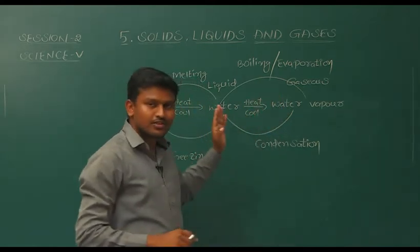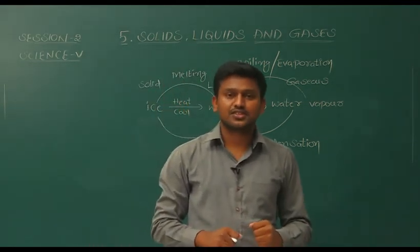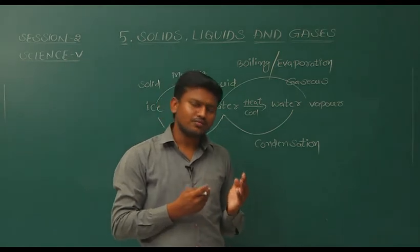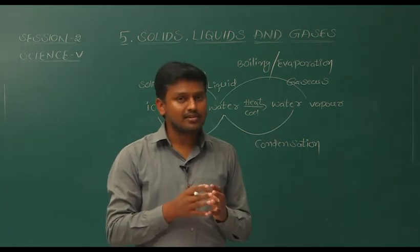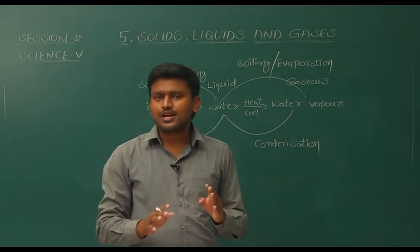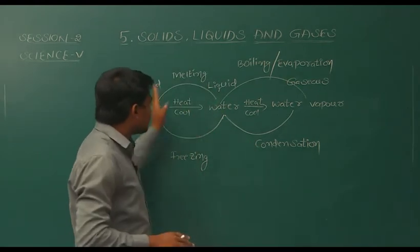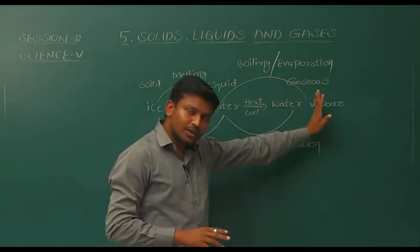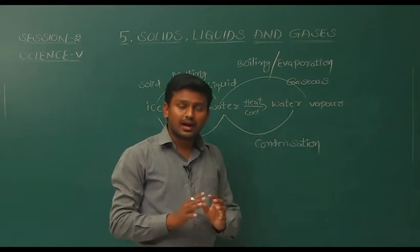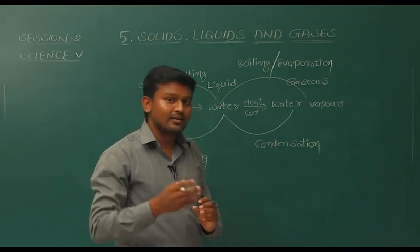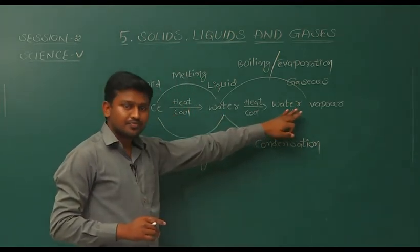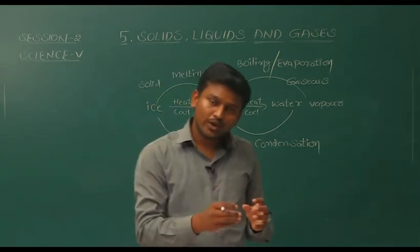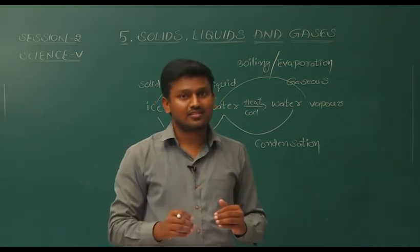Now let us see chemical change and physical change. Physical change means there will be a change in the state of matter, size, and shape — that is it. A new substance does not form in a physical change. Ice converting to water, water converting to water vapour — the state of matter changes, but it is possible to get the original composition again. I can get water from water vapour and ice from water. So this change is called a physical change — a change in which we can get the original composition again.